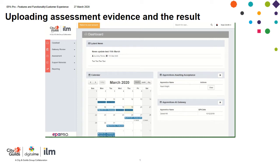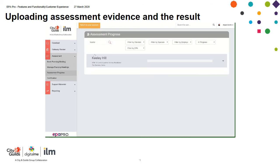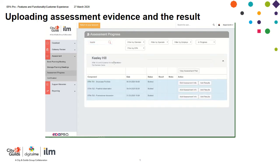This short video will show you how to upload assessment documentation into EPA Pro and then add a result. Moving into the assessment space once again, find the apprentice that you need by typing the name in this field here. I want to add a result and upload my assessment documentation for Keely Hill's showcase portfolio.